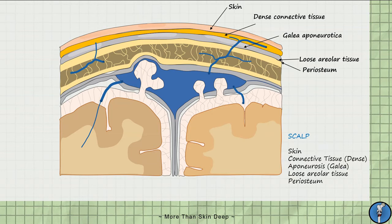Moving deeper, we have the three layers of the bony skull itself: the external table, diploe, and internal table, which all contribute to providing a rigid shell which protects the brain.